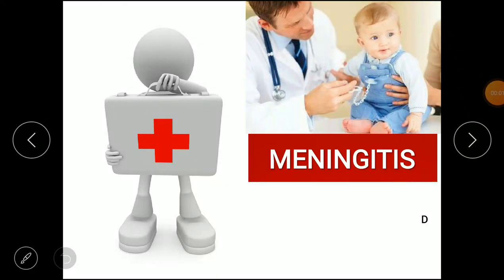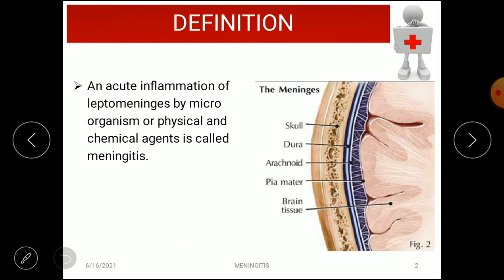We start with meningitis. The basic term 'itis' means inflammation, so meningitis refers to inflammation of the meninges. The exact definition is: an acute inflammation of the leptomeninges by microorganisms or physical and chemical agents. Due to these agents, an inflammatory reaction is produced in the leptomeninges.